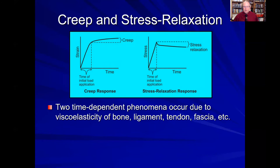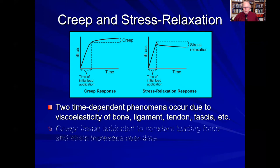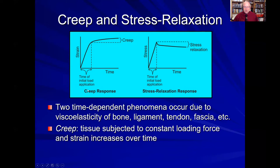Two of the main time-dependent properties that we should all understand as clinicians are creep and stress relaxation. Creep is such that if we take a ligament or tendon and load it up to a certain load — say a 10-pound load — and keep it at 10 pounds, initially that ligament or tendon will stretch to a certain point. If we keep that load on it over time, the material will tend to gradually deform more or stretch more — and that's called creep. This is time-dependent: the longer we keep that load applied, because of its viscous characteristics, it will tend to continue elongating, which is called creep response.